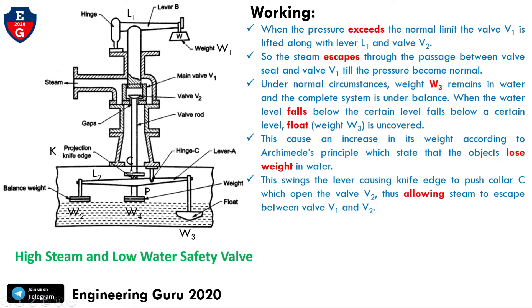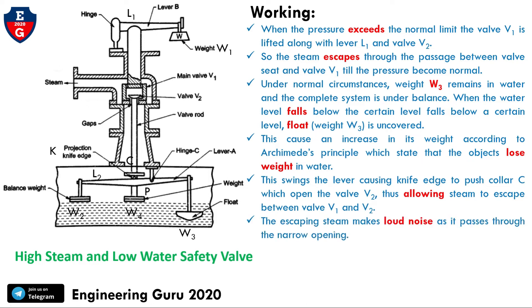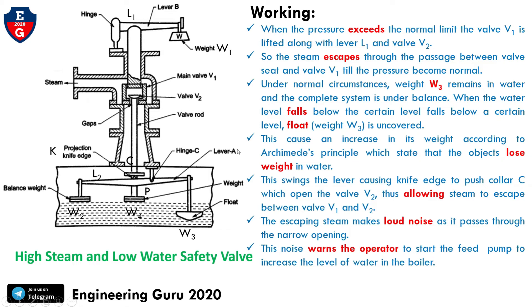The swing of the lever causes the knife edge to push the collar, which opens valve V2. This hemispherical valve opens, allowing steam to escape between valves V1 and V2. The escaping steam makes a loud noise as it passes through the narrow opening, warning the operator to start the feed pump to increase the water level in the boiler.